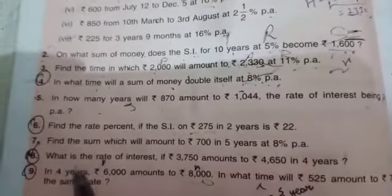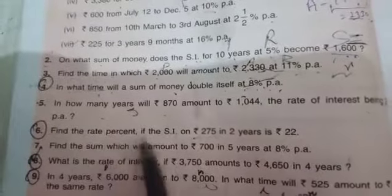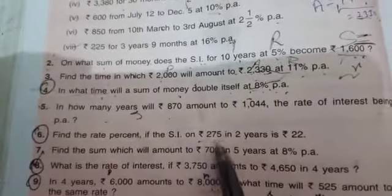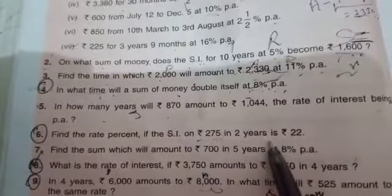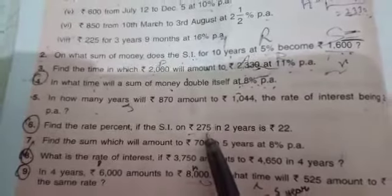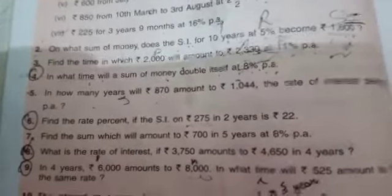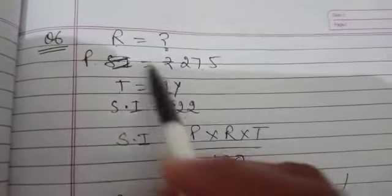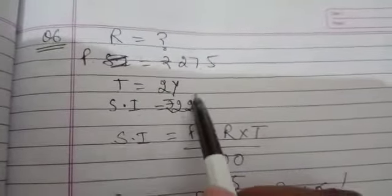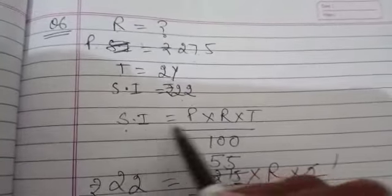So next is question number 6. Find the rate percent. Here we have to find rate. If simple interest on 275 rupees in 2 years is 22 rupees. Means simple interest is given, principle is given, time is given, and we have to find rate. So as per the statement, rate we have to find, principle is this, time is this, simple interest is this. Simple interest formula we have, that is P into R into T over 100.